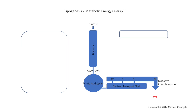A cell will generally only produce enough ATP to cover its cellular needs. Above and beyond this, if excess glucose enters the cell, the cell will store this glucose in the form of glycogen.